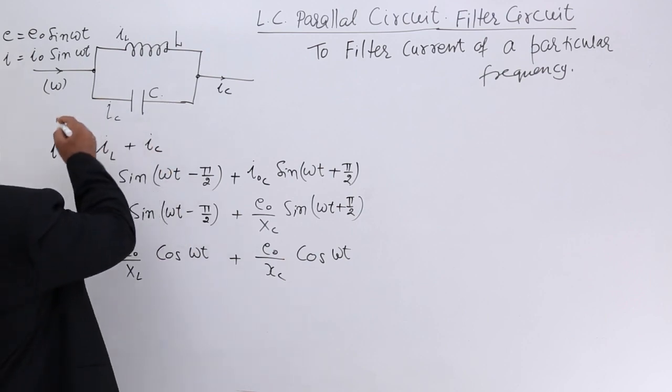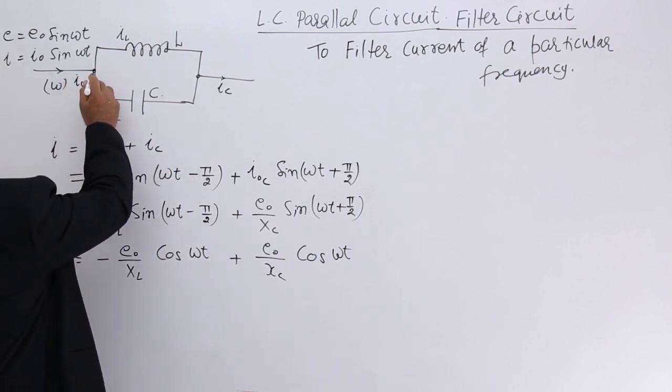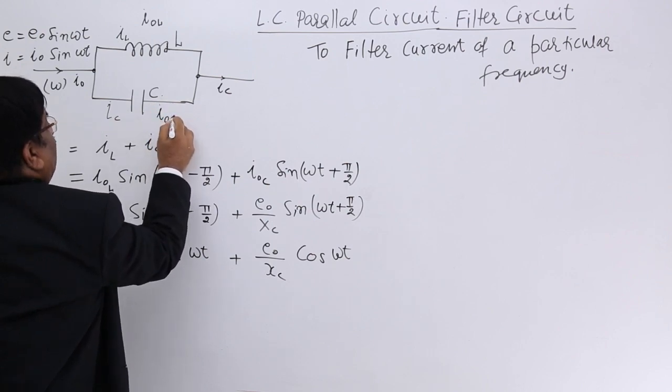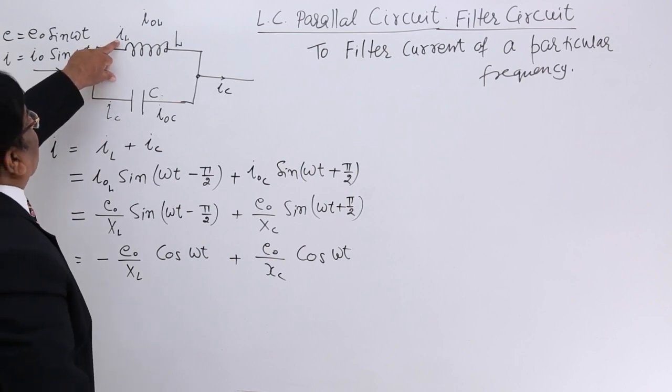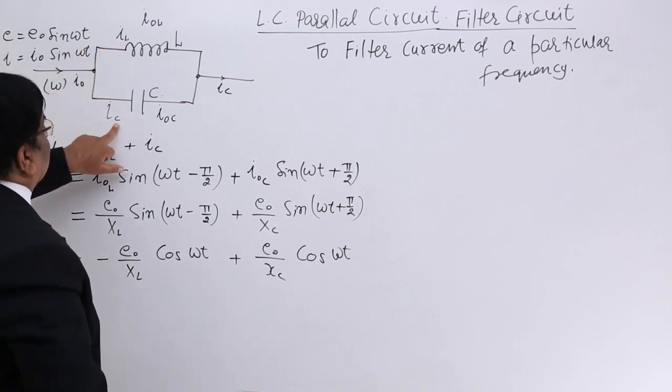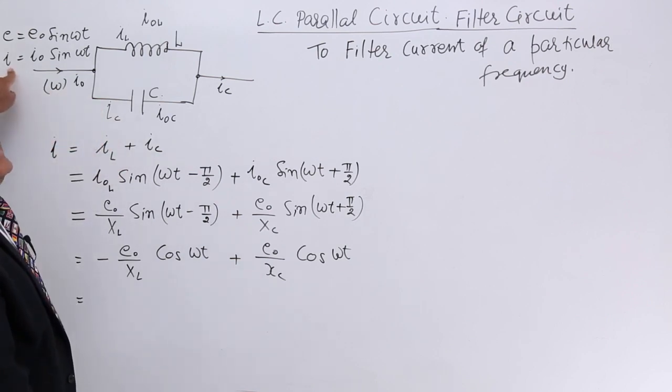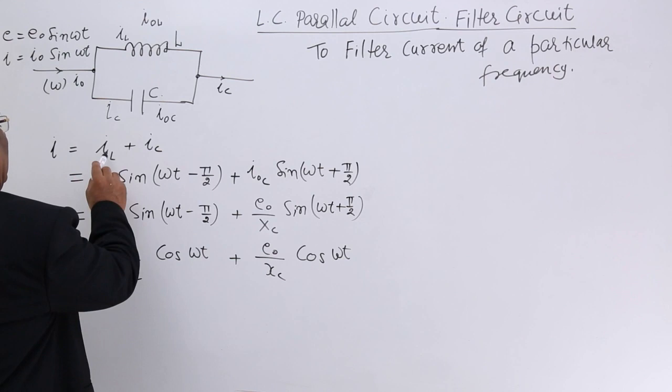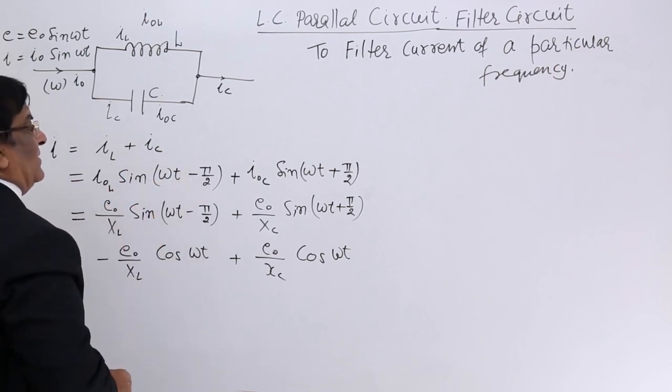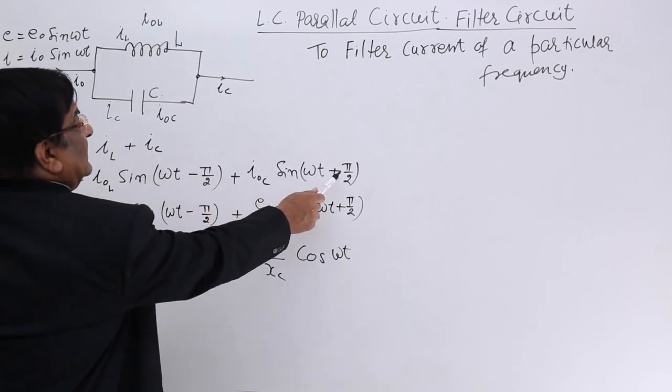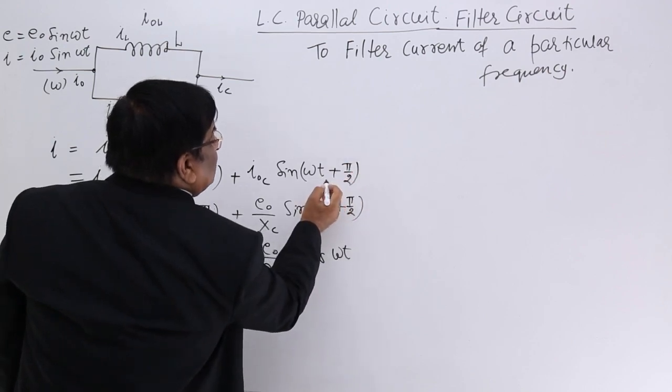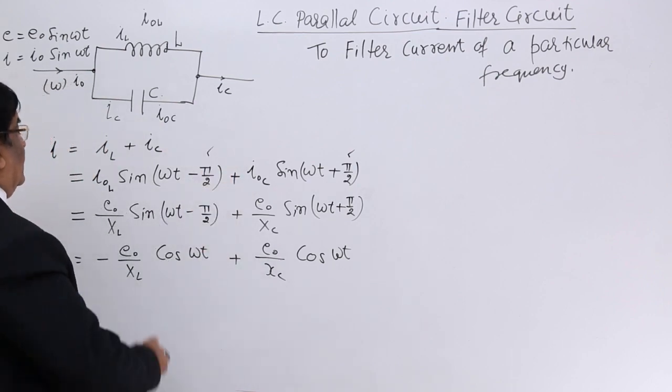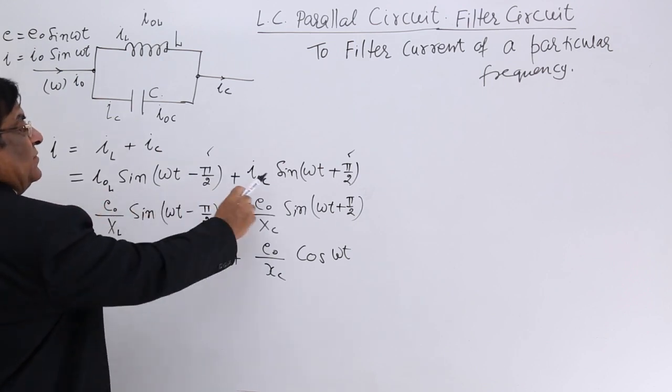Now this IL and IC, the maximum value of I here is I₀, here the maximum value is IL₀ through L and here the maximum value is IC₀ through capacitor. Now at any instant IL, at any instant IC is the component of current at any instant I and that is written in this equation. This IL we can write as IL₀ sin(ωt - π/2).